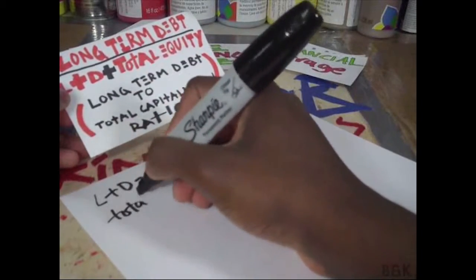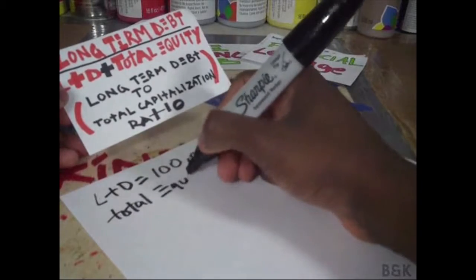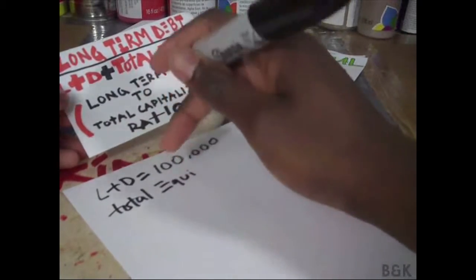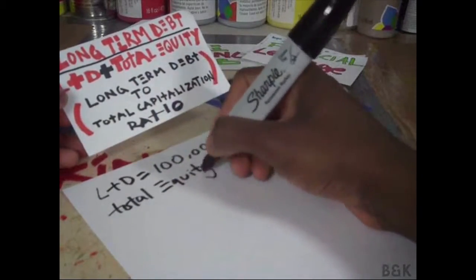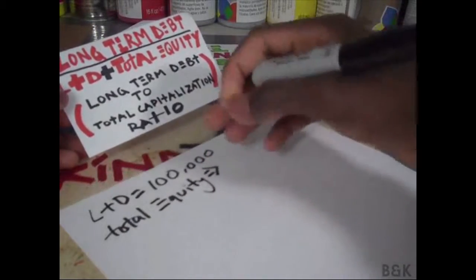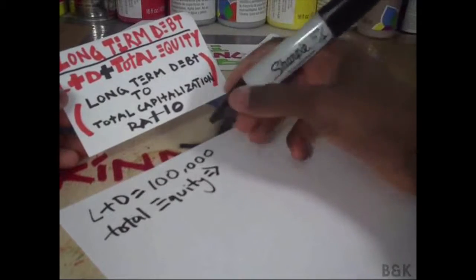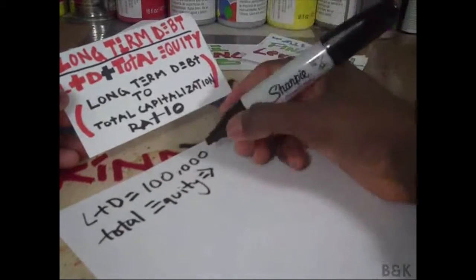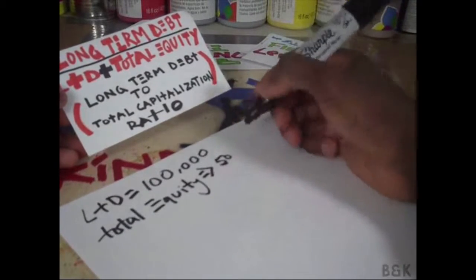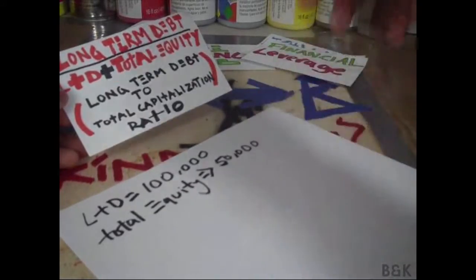When you start writing it out, it does irritate you a little — why am I adding long-term debt to my total equity for the denominator? It just doesn't add to any line of thinking, at least not like the next ratio will. But it exists, so we must do it some justice. Total equity: $50,000.